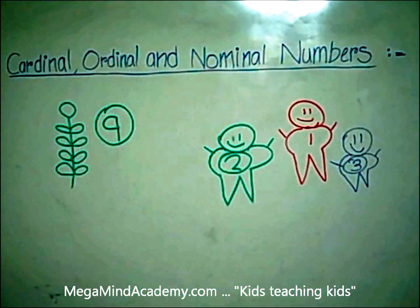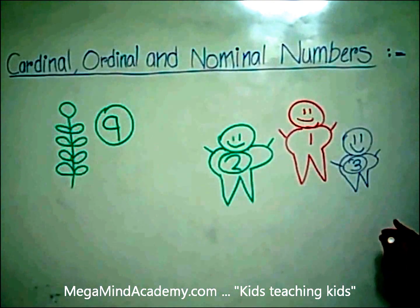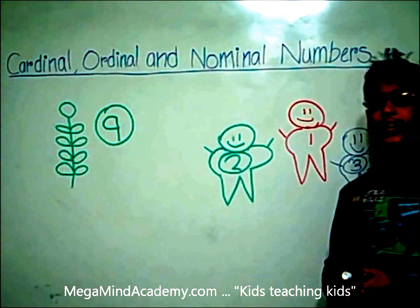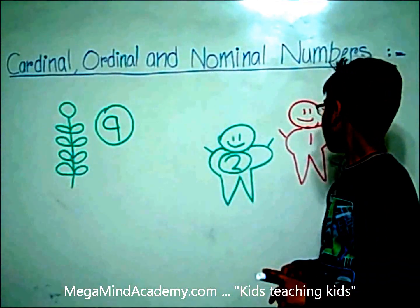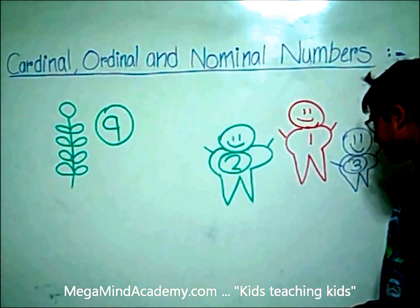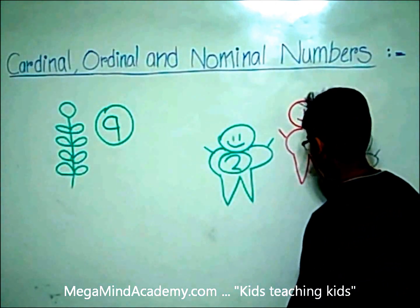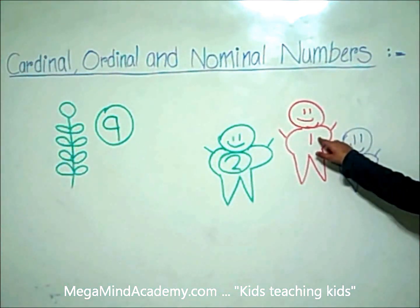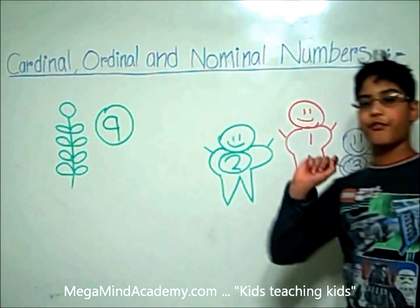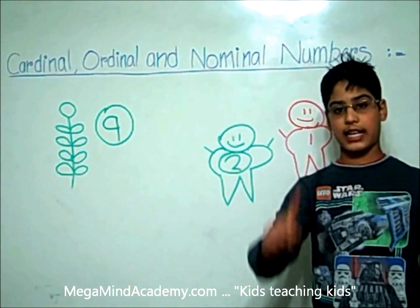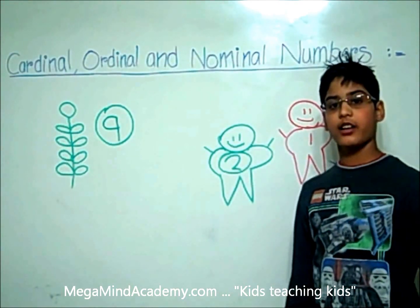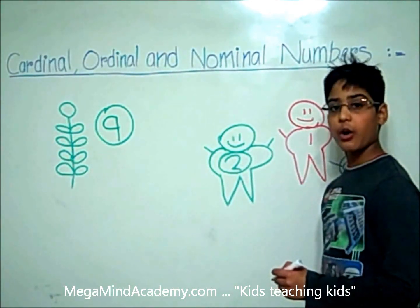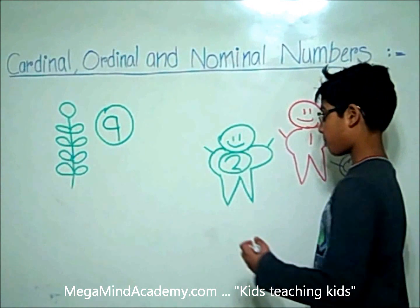So, let's look at an example. These three kids took part in a race. The kid in the red shirt came in first place. Here, first place is an ordinal number.